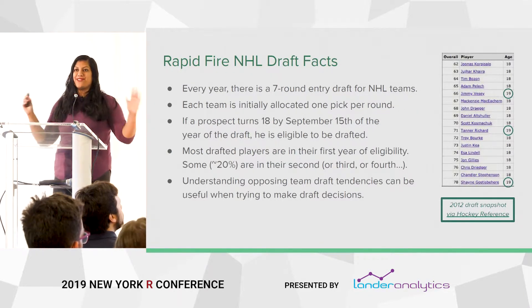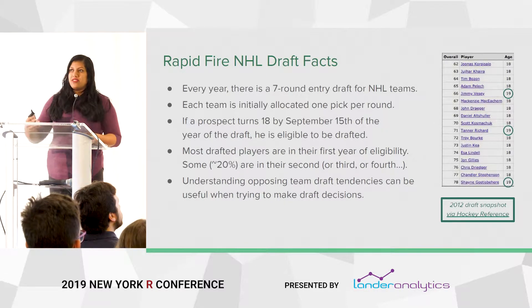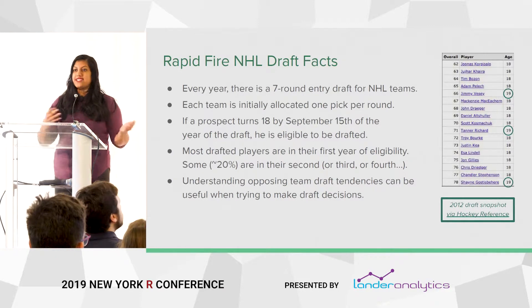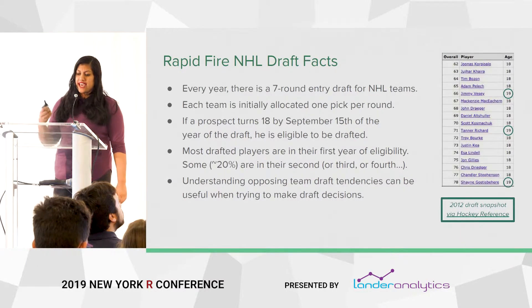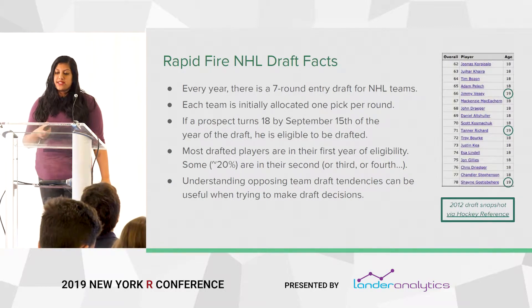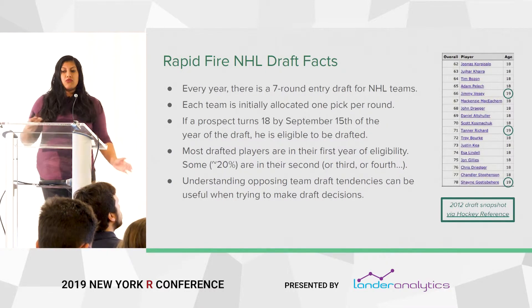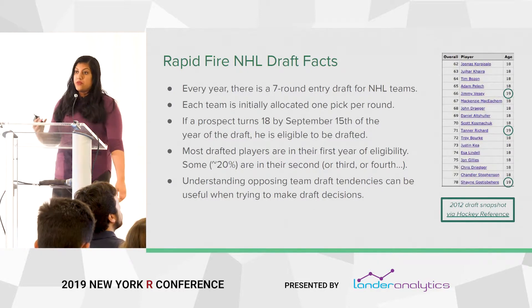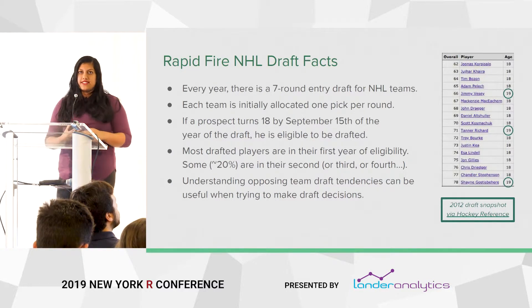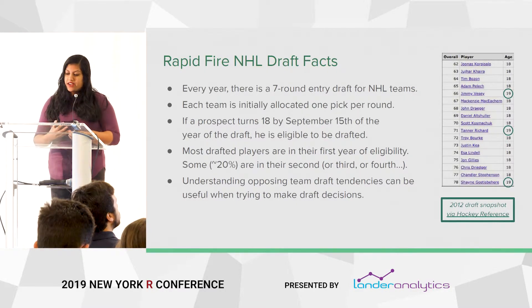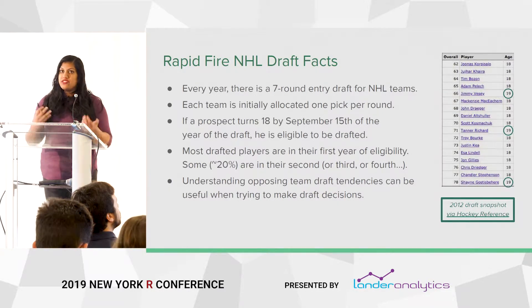Every year there is a seven-round entry draft for NHL teams. Each team picks a young player they'd like to sign in the future — they're picking the rights to that player — and each team is allocated one pick per round. For the NHL, if a prospect turns 18 by September 15th of that year, he's eligible to be drafted. Most drafted players are in their first year of eligibility, but one in five are actually in their second, third, or fourth year — so they might be 19, 20, or 21 years old. Understanding opposing team draft tendencies and general trends can be really useful when making draft decisions, because from a team perspective you want to know what other teams are going to do and whether they've found any potential inefficiencies.